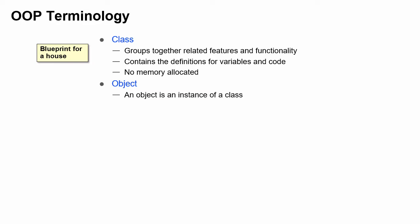Next is an object, which is an instance of a class. Memory is allocated when you construct the object. If you start with a blueprint and follow the plans, you will construct an actual house that you can live in.